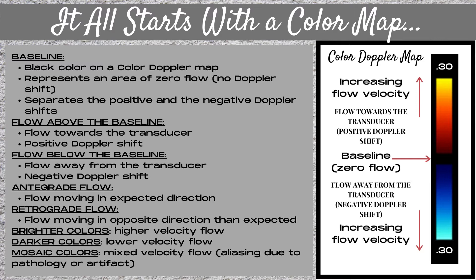Next is antegrade flow. Antegrade flow is commonly mistaken for a positive Doppler shift. However, what it really means is that flow in a vessel is moving in the expected direction for that vessel. Similarly, retrograde flow means that flow is moving in the opposite direction than expected for a vessel, and even though it's commonly mistaken as a negative Doppler shift, this is not necessarily the case.